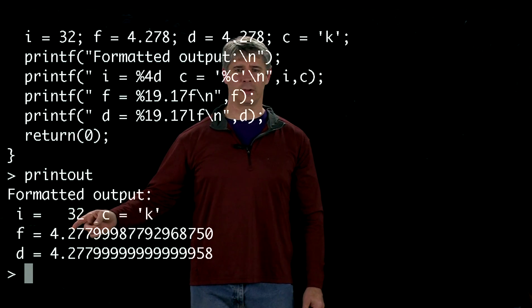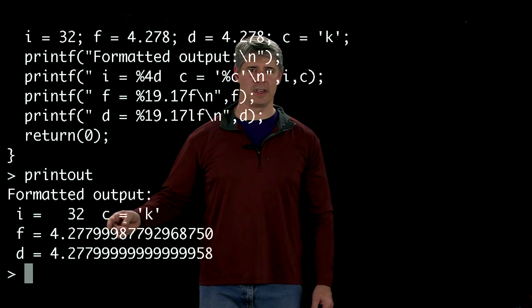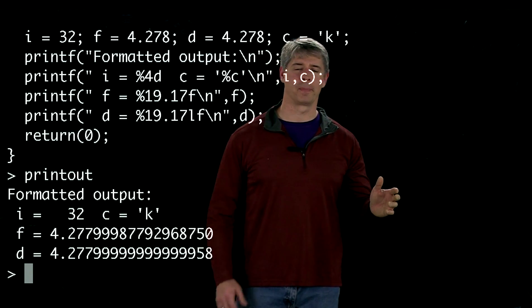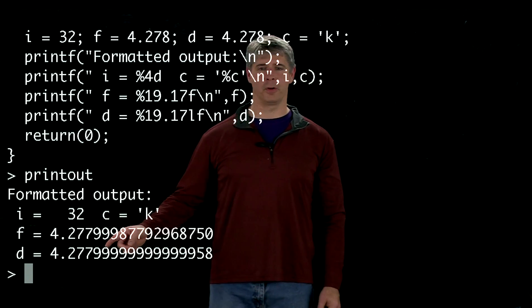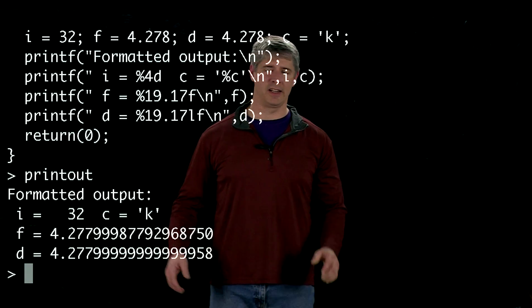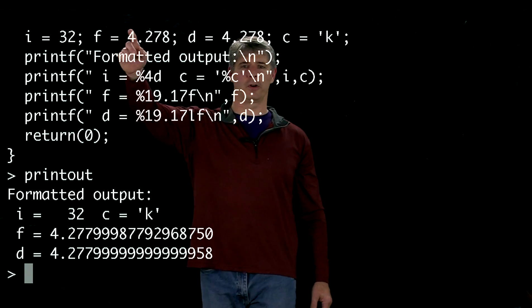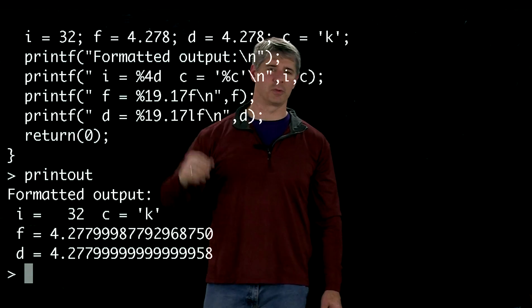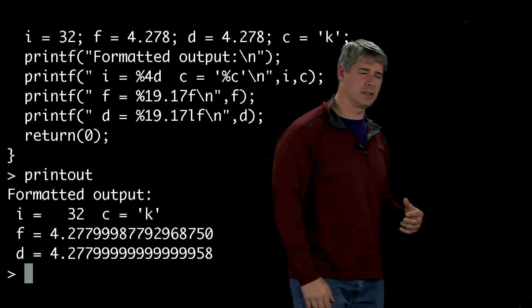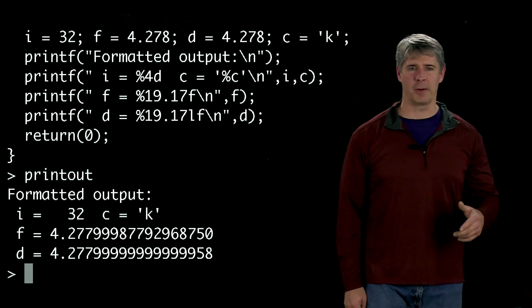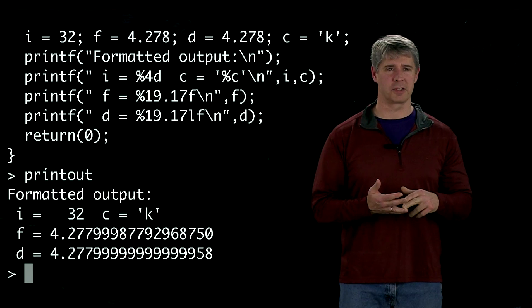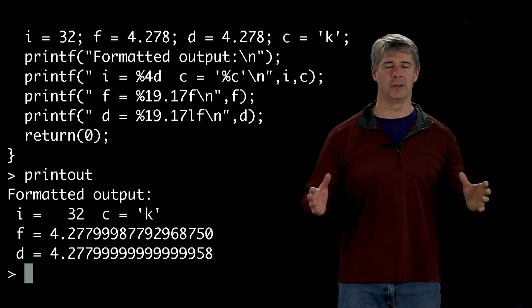Now we see that f is equal to 4.277999, etc., and d is equal to 4.27799999, etc. Neither one of them are equal to 4.278 as we requested. And that's because the floating point representations in floats and doubles cannot represent every value exactly.